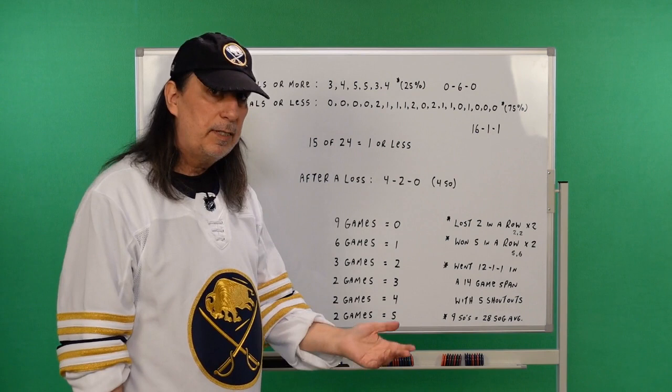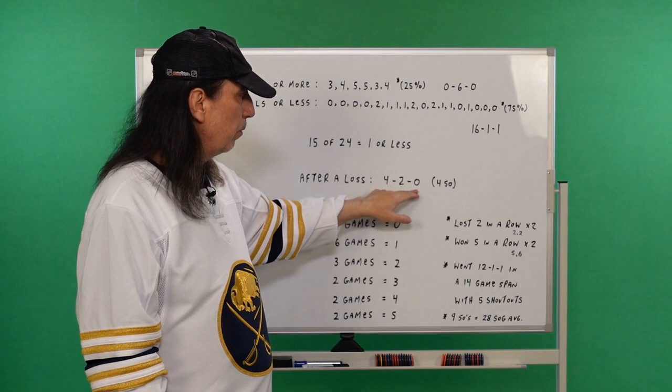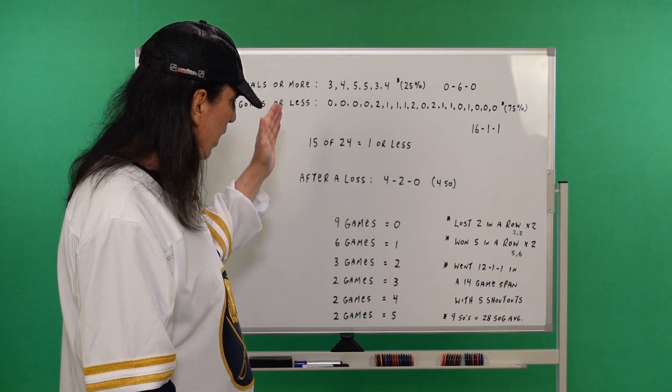15 out of 24 games, he's let in one goal or less this year. 15 of 24, that's over 60%. After a loss, he's 4-2-0 with four shutouts, though. I'll go back to that in a sec. Now, breaking down the season, let's look at it by goals.